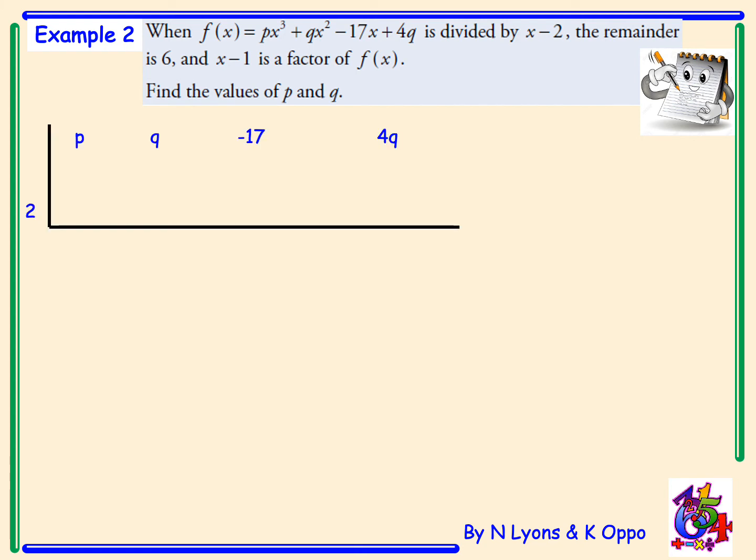Starting with x minus 2, if we put this through synthetic division, 2 times p is 2p, 2 times 2p is 4p, q plus 4p, 2 times that will give 8p plus 2q, we then need to add on negative 17, giving 4p plus 2q take away 17. Now, we're told that if we divide by x minus 2, the remainder is 6. This will then create the equation 4q plus 8p plus 4q minus 34 is equal to 6, which rearranges to give 8p plus 8q equals 40.